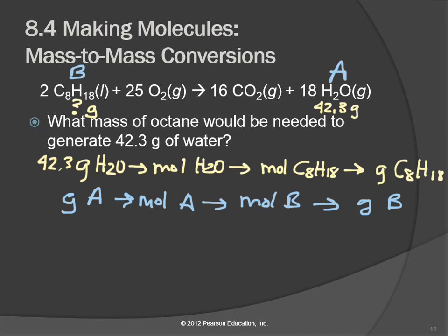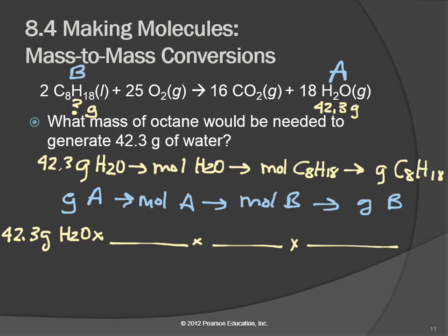Another example. Magnesium hydroxide, the active ingredient in milk of magnesia, neutralizes stomach acid — primarily HCl — according to a reaction. How much HCl in grams can be neutralized by 5.5 grams of magnesium hydroxide? We don't need all the background words — what we need is the balanced chemical equation, what they're asking, and what we're starting with. So: starting with 5.50 grams of magnesium hydroxide, finding grams of HCl.